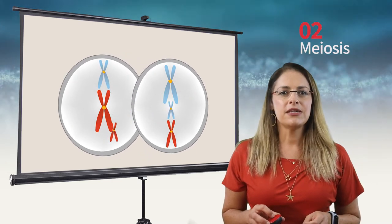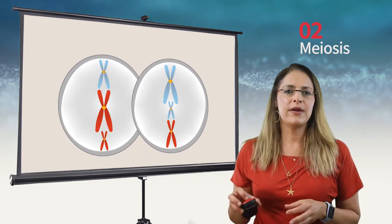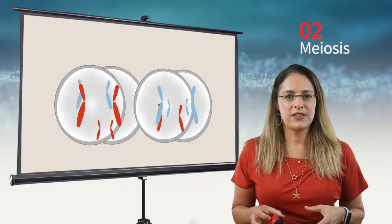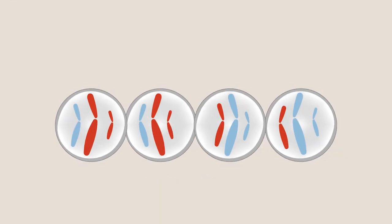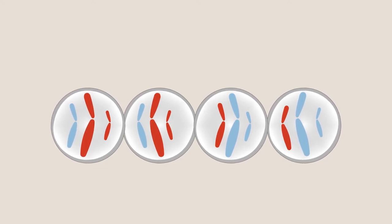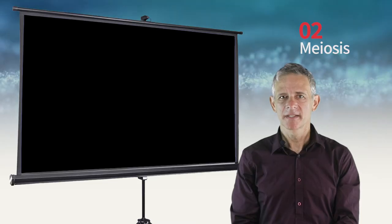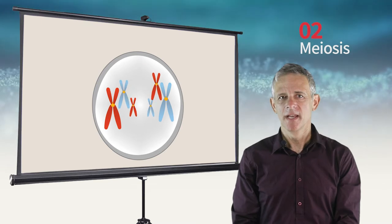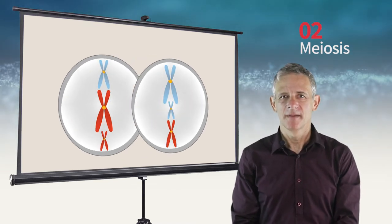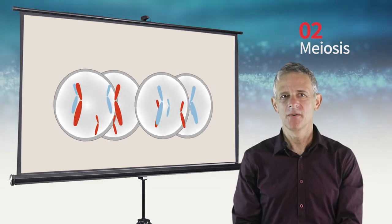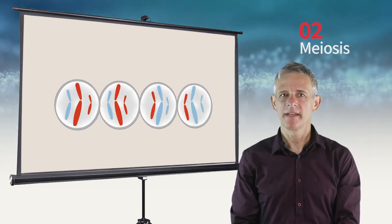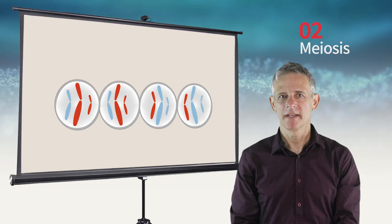In meiosis, one diploid cell is divided by two consecutive divisions into four cells. These four cells are not only genetically different from each other but also from any other cell. Meiosis thus generates a huge diversity, which is of great evolutionary importance. Meiosis is highly conserved in all eukaryotes and is essential for preserving and maintaining the genome from one generation to the next.